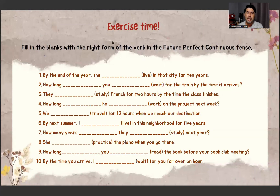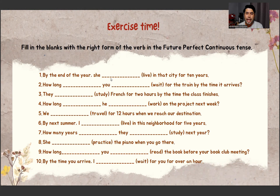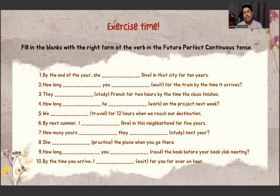Now it's exercise time. Fill in the blanks with the right form of the verb in the Future Perfect Continuous tense. For example: By the end of the year, she will have been living in that city for 10 years. You will do the other sentences yourself. Check your answers in the next lesson. Thank you for your attention, bye!